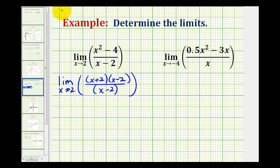And what we'll notice is there's a common factor of x minus 2. And so graphically what's happening is that x equals 2, because of this common factor, there's a hole which means we have removable discontinuity. And if we simplify this, we have the limit as x approaches 2 of just x plus 2.